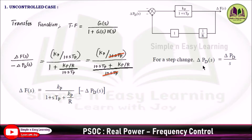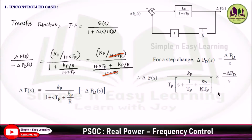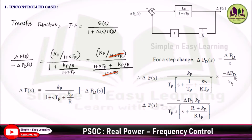For a step change, del PD(s) equals del PD divided by s. Substituting that and taking TP out from the denominator, it becomes S plus 1/TP plus KP divided by R times TP. Rearranging the terms, we get del F(s) equal to minus del PD times KP divided by TP times S.